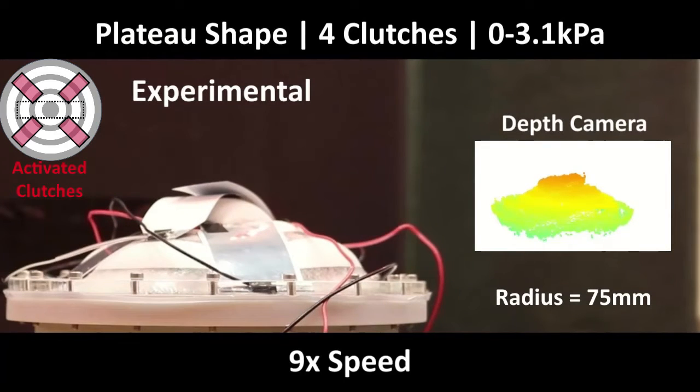With all four perimeter clutches active, we achieve a plateau shape at the same pressure.